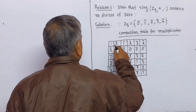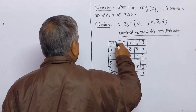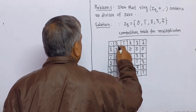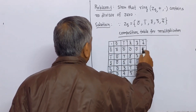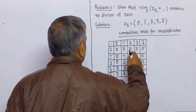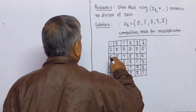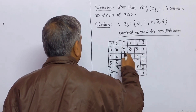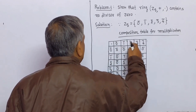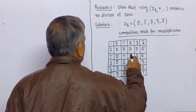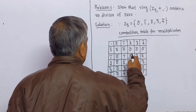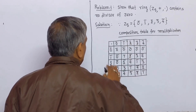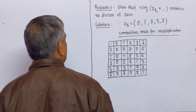Since 0-bar multiplied by 0-bar is 0-bar, and 0-bar multiplied by any element is 0-bar. Here 1-bar multiplied by 1-bar is 1-bar, 1-bar multiplied by 2-bar is 2-bar, and in this way we have framed this table.